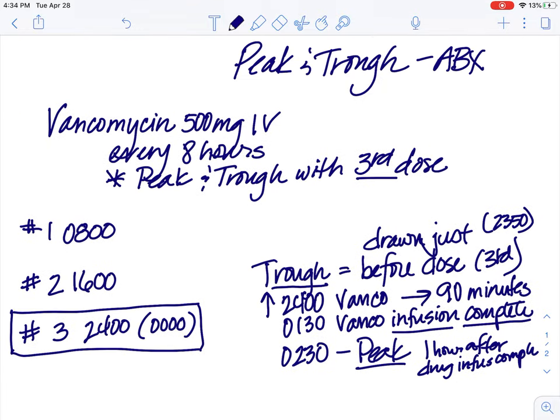I hope that makes sense. The trough is drawn — remember, this is the lowest point of the drug in the blood — and it's going to be drawn just before this third dose. Then the peak is going to be drawn one hour after this drug is done infusing. With this peak and trough, pharmacy will go and do pharmacokinetics on it, and they will find out whether the level is correct.